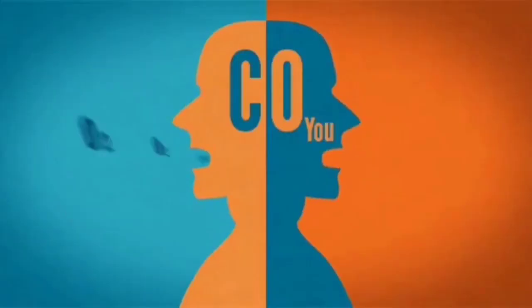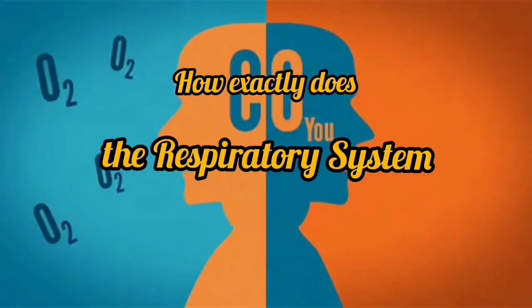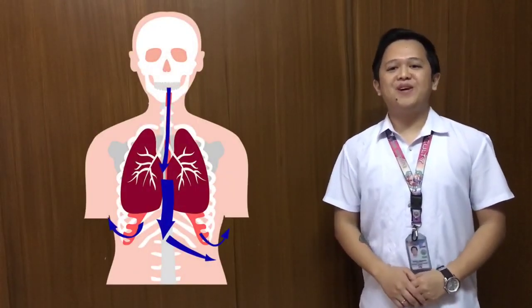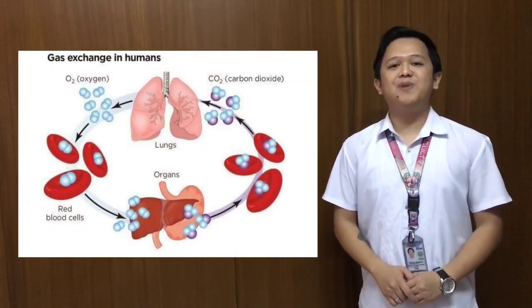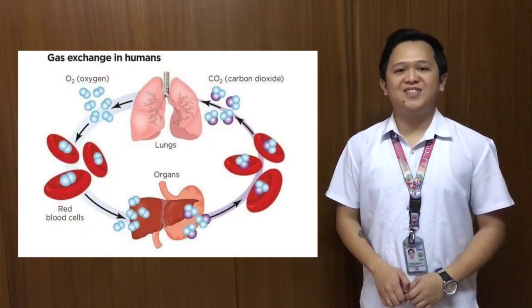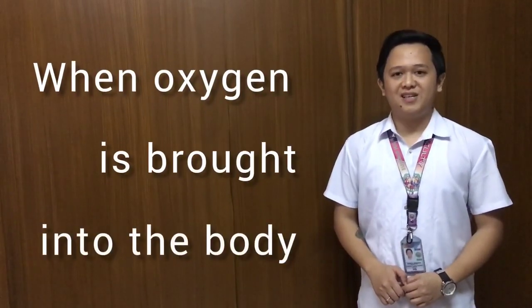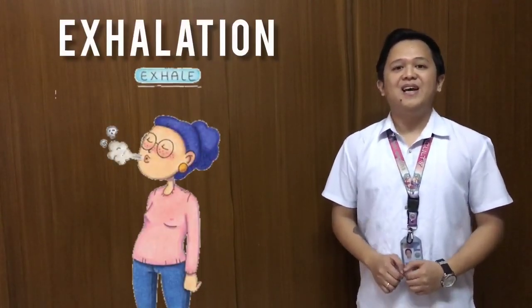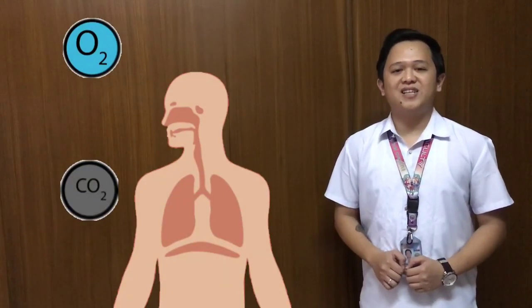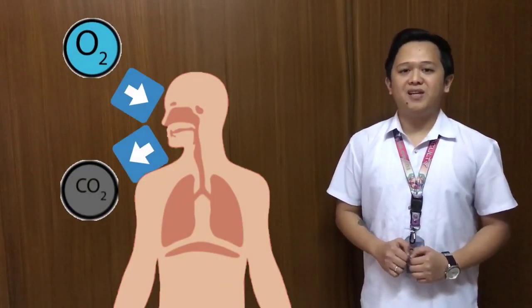Your body needs oxygen to function and the cells are responsible for making use of oxygen. So, how exactly does the respiratory system work? Let's take a closer look now. The respiratory system is responsible for supplying fresh oxygen to the blood, which is distributed to the body's tissues. The inhalation process is when oxygen is brought into your body and the exhalation process is when carbon dioxide is sent out of the body. The process by which oxygen and carbon dioxide are exchanged between cells, the blood, and the air in the lungs is also known as respiration.